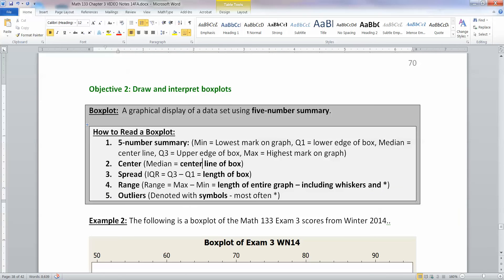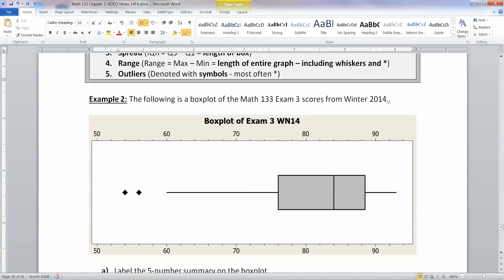So we're going to create a box plot. A box plot is a graph of the five-number summary. You have the center, which is the center line of the box. You have the spread, which is Q3 to Q1, which is the length of the box. Then you have your range, which is the length of the entire graph, including whiskers and stars. And then stars are for outliers. The outliers are denoted with symbols. They're most often stars, but not always.